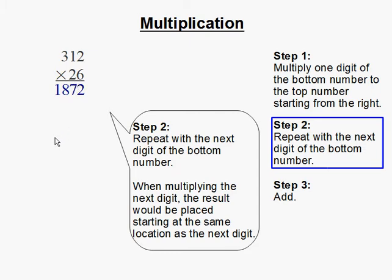Now when multiplying the next digit, the result would be placed starting at the same location as the next digit.